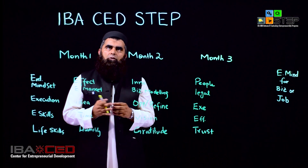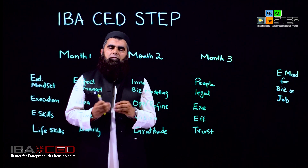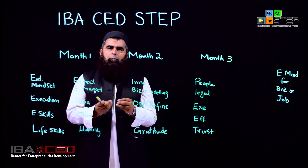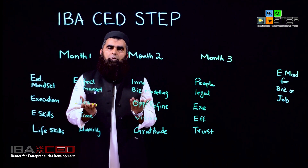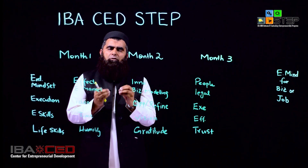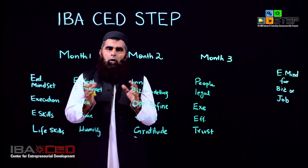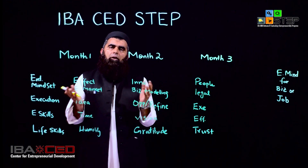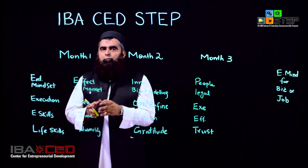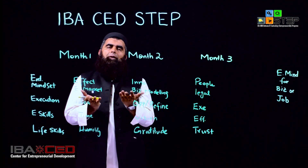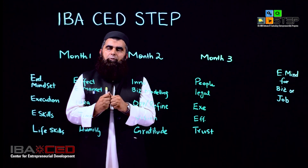The IBA Center for Entrepreneurial Development STEP Program — the Science and Technology Entrepreneurship Program — is specially designed for science, technology, and engineering students, and those people who are interested in R&D, scientific research, and scientific development. This is a three-month program offered at IBA CED, with various modules that I will now explain.